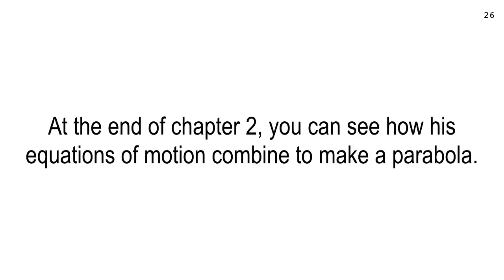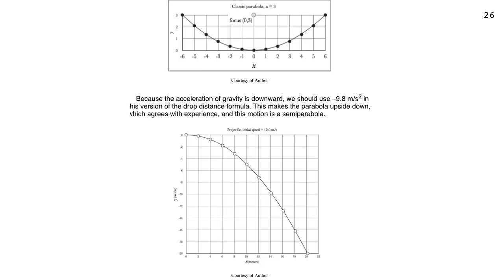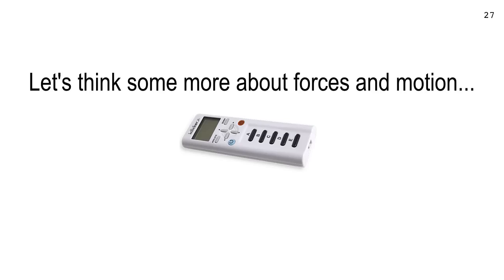At the end of chapter two in your textbook, you'll see how the equations of motion combine to make a parabola — another one of Galileo's discoveries. Nobody knew if the trajectory of a projectile was an ellipse, a circle, or something else. Galileo proved it's a parabola, which is a precise geometric curve. All right, let's try some more — we're going back to multiple choice.